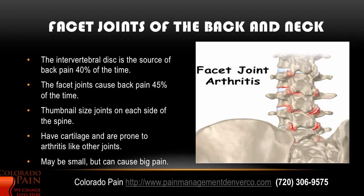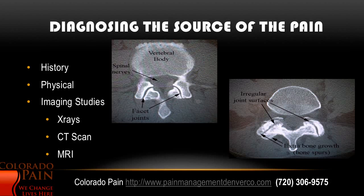The facet joints of the back and the neck are at every level. What you can see here is the back of the spine, and the facet joints are these small thumbnail-sized joints on both the left and the right side. They contain cartilage just like other mobile joints like the hip and the knee, and they're prone to arthritis. Even though they're small, they can be a big source of pain.